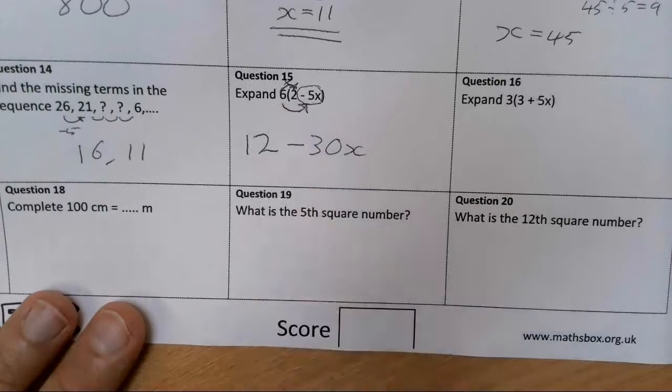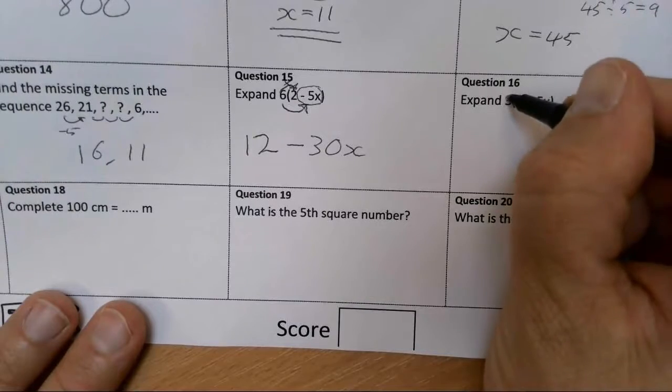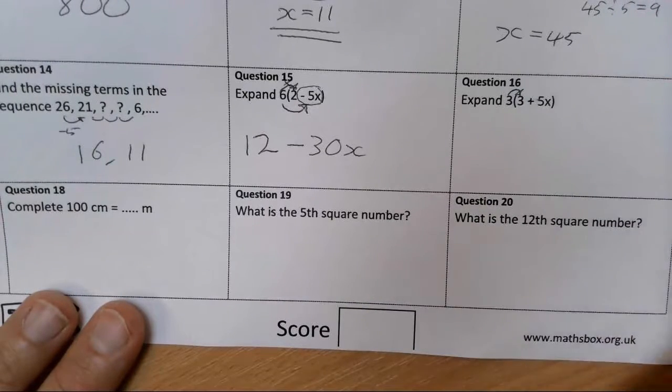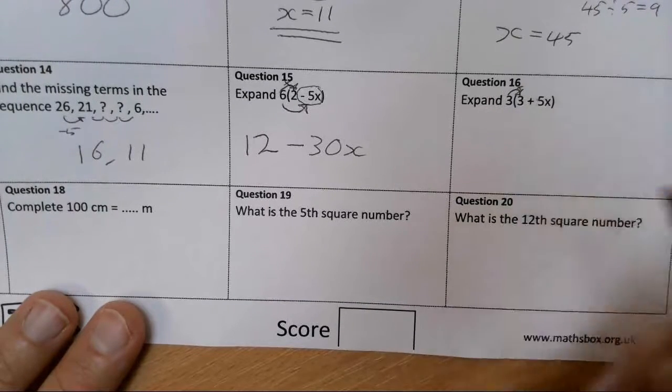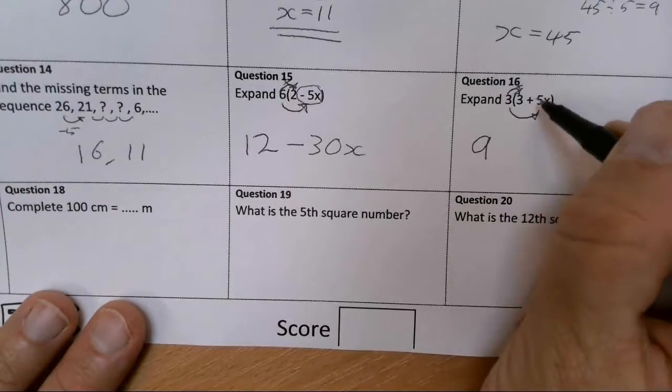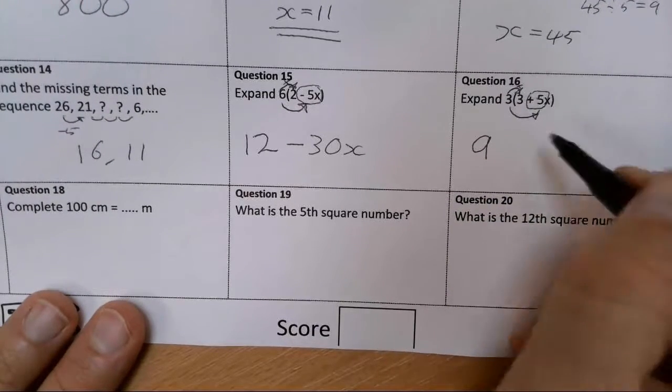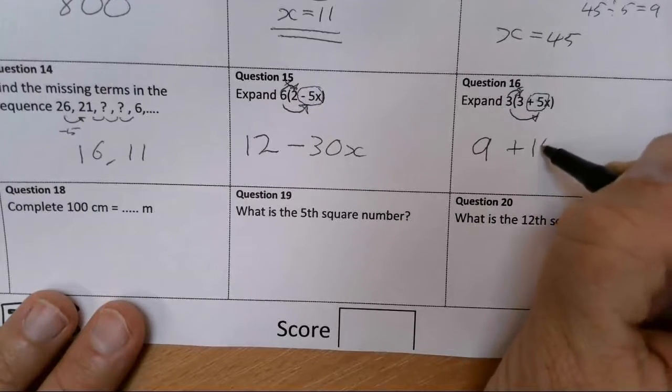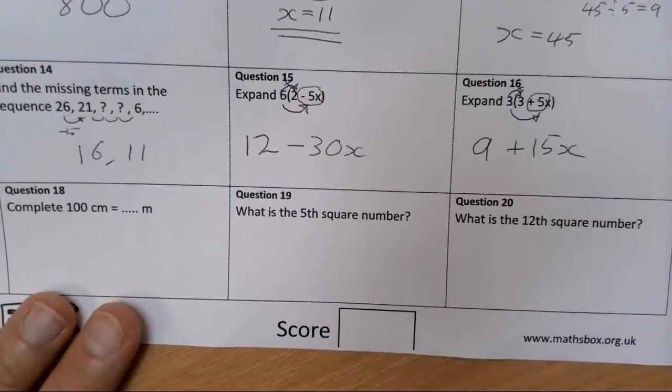Same idea here. The first two are multiplied together. So 3 times by 3 gives me 9. And then 3 times by plus 5x is going to give me 15x, plus 15x.